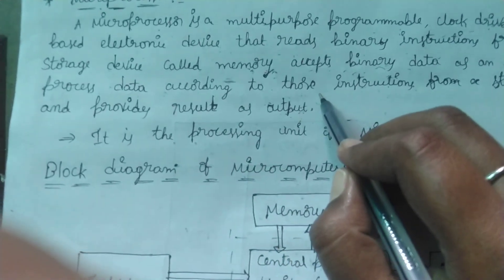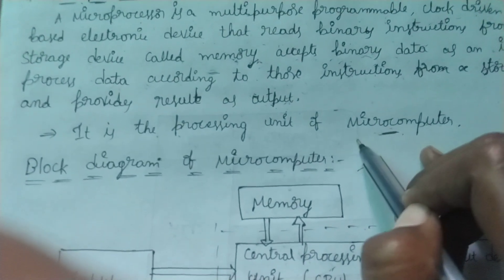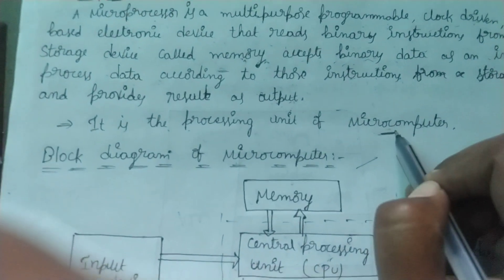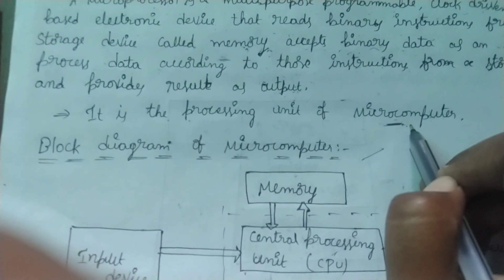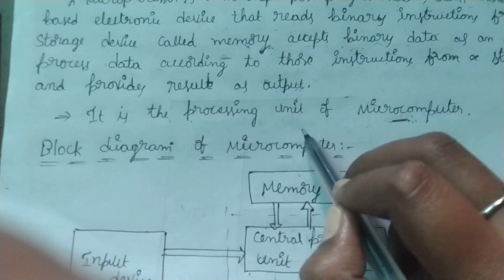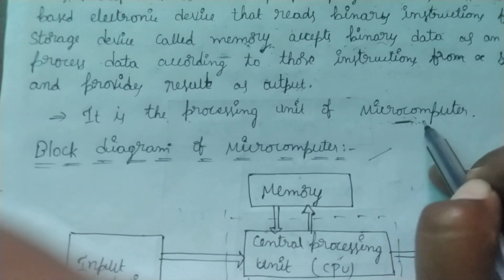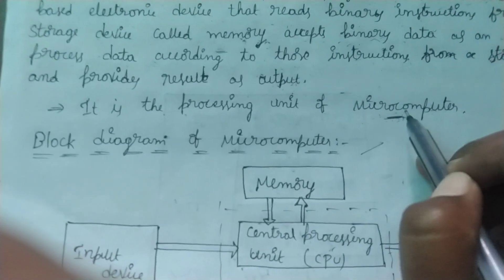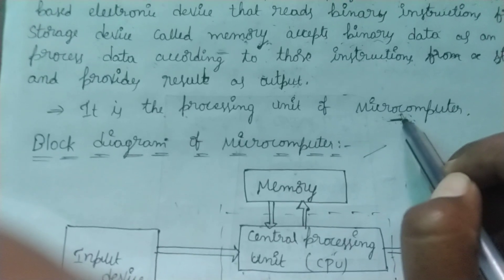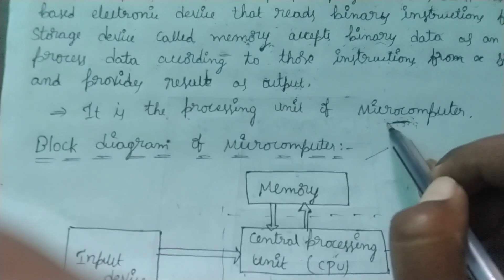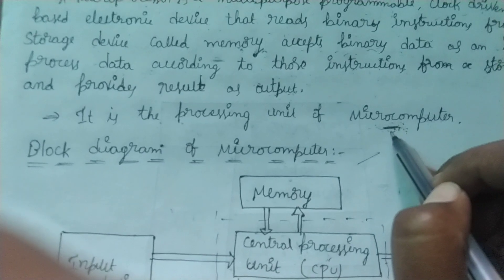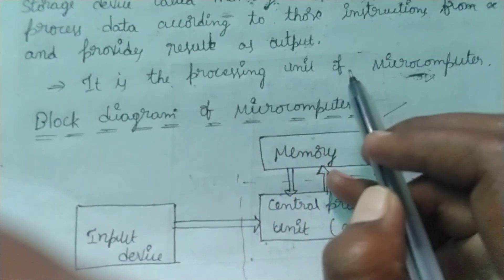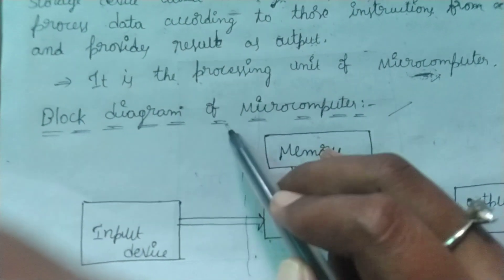The application of microprocessor is that it is the processing unit of a microcomputer. This is a very important point to keep in mind. Microprocessor is used as the main processing unit of the microcomputer. Microcomputer is a digital computer. Next, we have to see the block diagram of microcomputer.